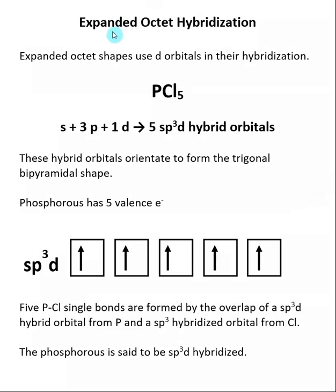So what happens when we get expanded octet hybridizations where we are putting more than 8 electrons around our central atom? The answer is these expanded octet shapes use d orbitals in their hybridization. This is part of the reason why expanded octet hybridization was only possible for atoms that had an n value greater than 2. When this occurs, the d orbitals are available for use in hybridization.